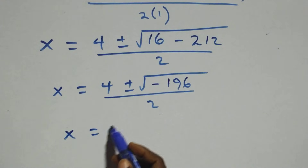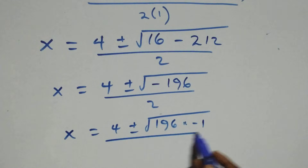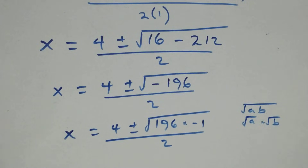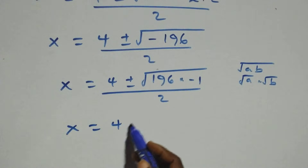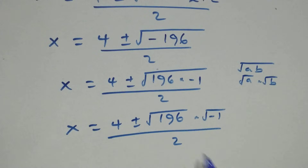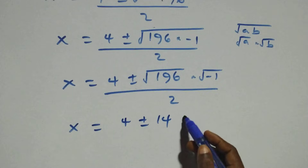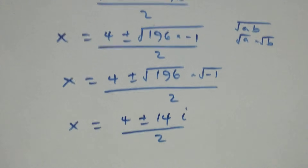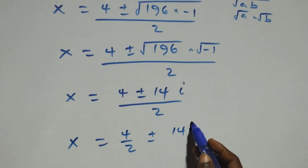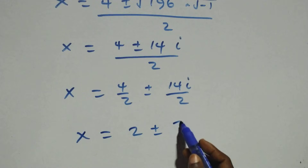We can write the square root of minus 196 as the square root of 196 times the square root of minus 1. The square root of 196 is 14, and the square root of minus 1 is i. So x equals 4 plus or minus 14i, all over 2, which separates to 4 over 2 plus or minus 14i over 2, giving x equals 2 plus or minus 7i. These are two complex solutions.